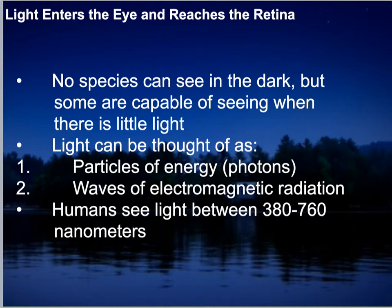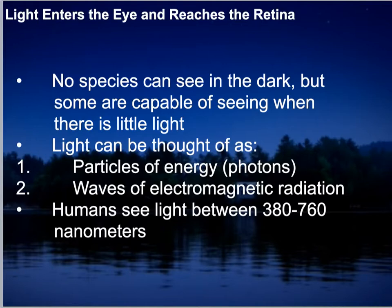There isn't a single species we know of that is able to see in the dark. Although some are capable of seeing when there is little light, none are able to see in complete darkness. Contrary to what may be believed about bats, they are simply adjusted to darkness — but in complete darkness they would not be able to see, as light is necessary to stimulate vision.